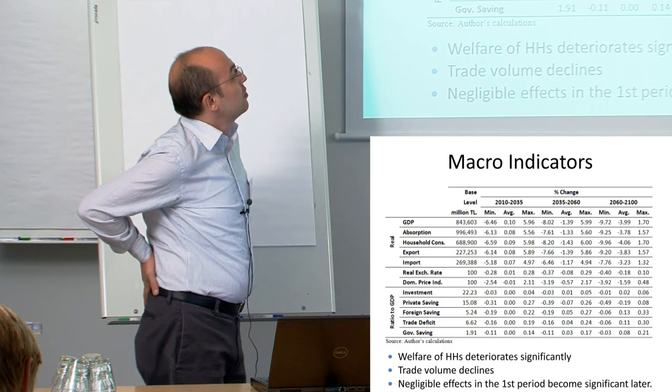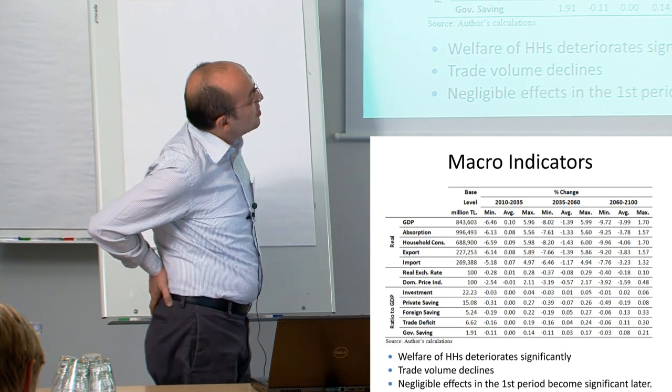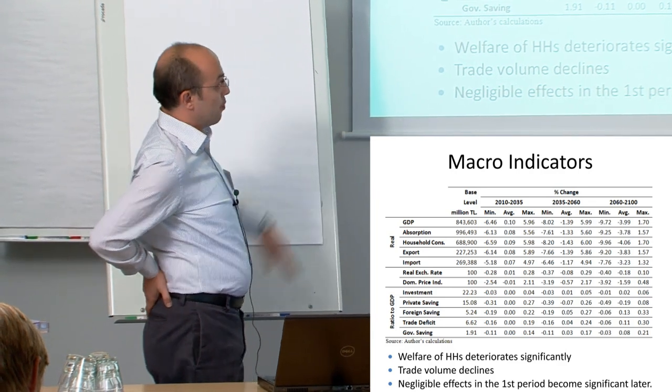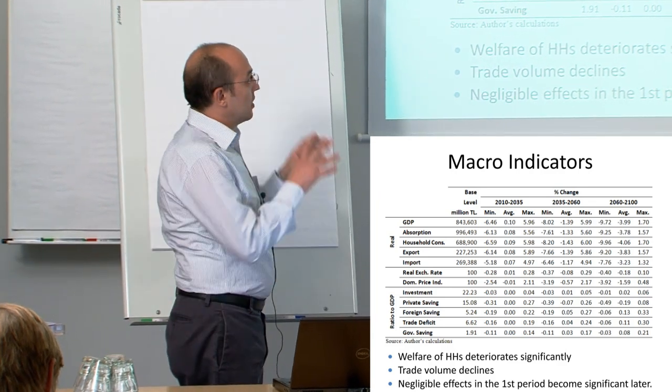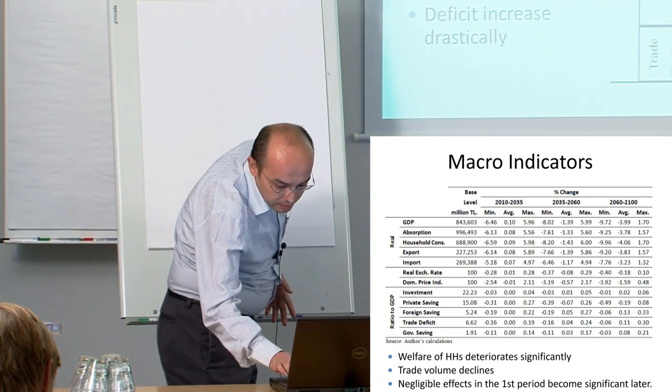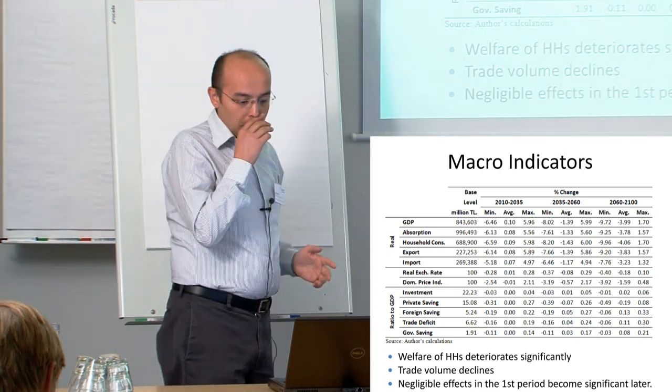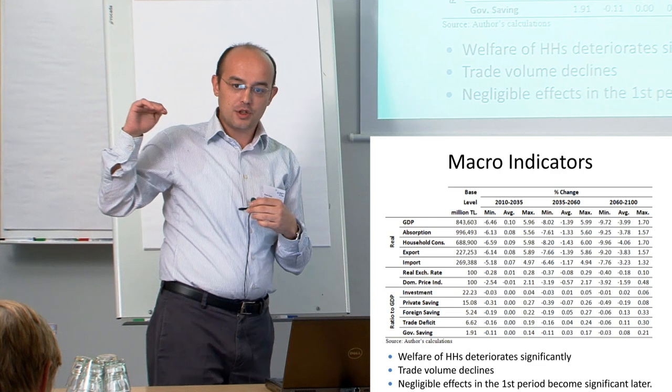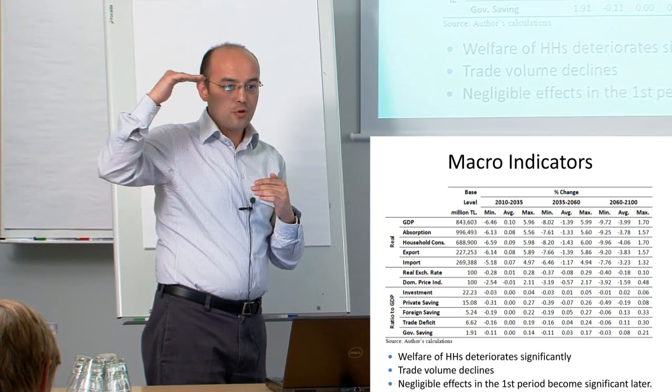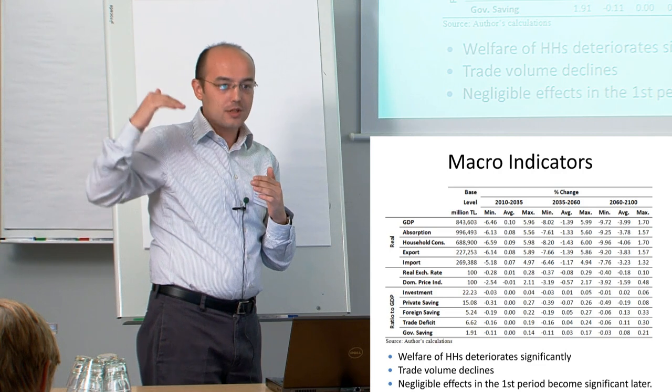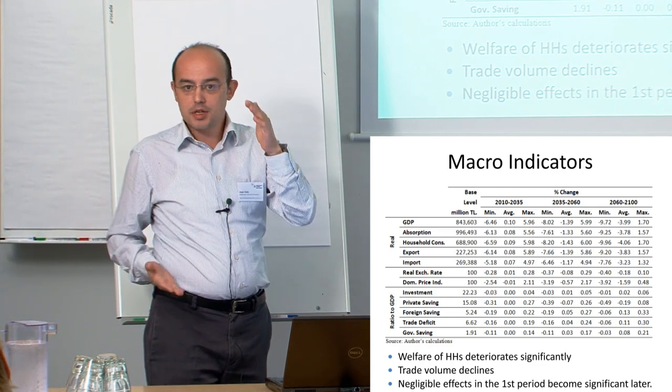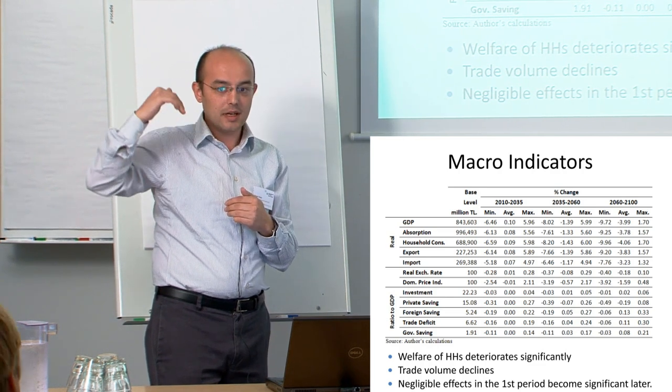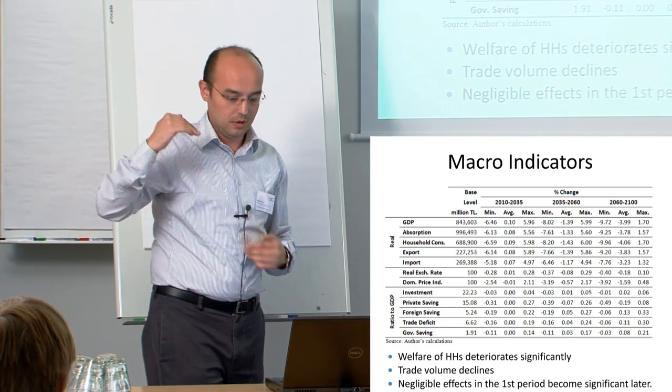In the last period after 2060, max values decline significantly. The maximum we get is 1.7% compared to 6%. In the first period, there are bad years and good years; on average nothing changed. In the second period, the number or severity of bad years increases. In the last period, good years start to decline and effects become minimal.